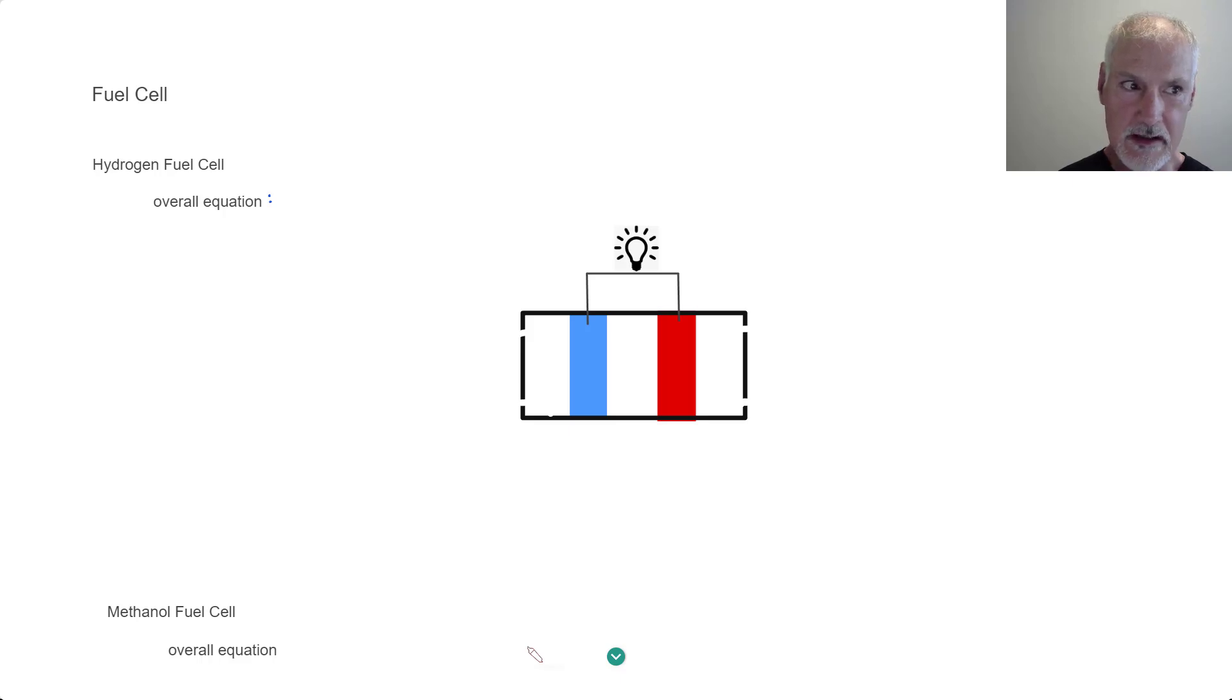The fuel cell is a much simpler process. In a fuel cell, chemical energy is directly converted into electrical energy by means of a continuous flow of reactants. We're responsible for knowing two cells, the hydrogen fuel cell and the methanol fuel cell. Let's begin with the overall equation in the hydrogen fuel cell.